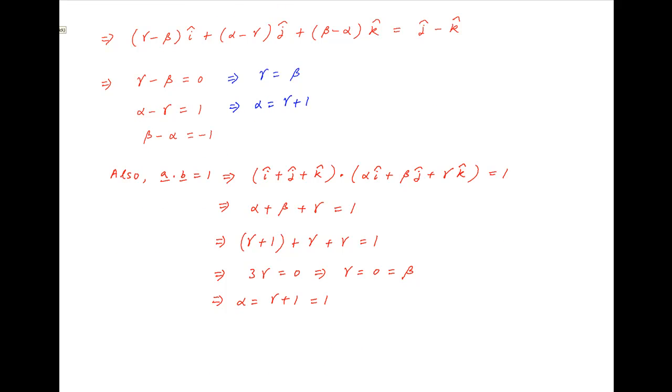Using these values of alpha, beta and gamma, the vector b, which is equal to alpha i plus beta j plus gamma k is equal to the unit vector i, which is the required answer.